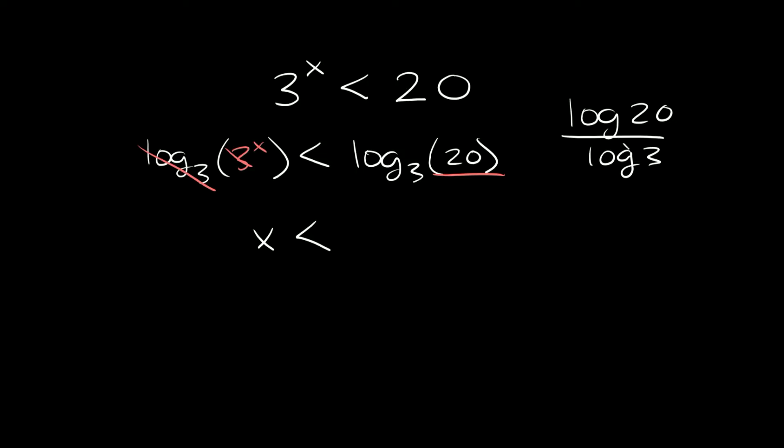So if you plug this into your calculator, you'll get that this is approximately, and we're just going to round to 3 decimal places. So we're going to say 2.727. So then this would be our answer right here.